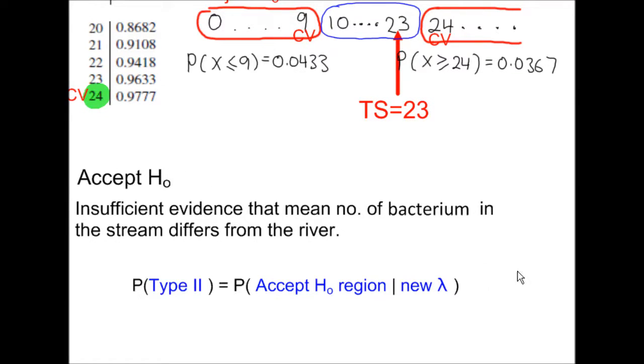Because we have accepted H0, we could have made a type 2 error. And to calculate the probability of a type 2 error, we work out the probability that x is between 10 and 23 inclusive, using some new value of lambda. And this value of lambda is given.